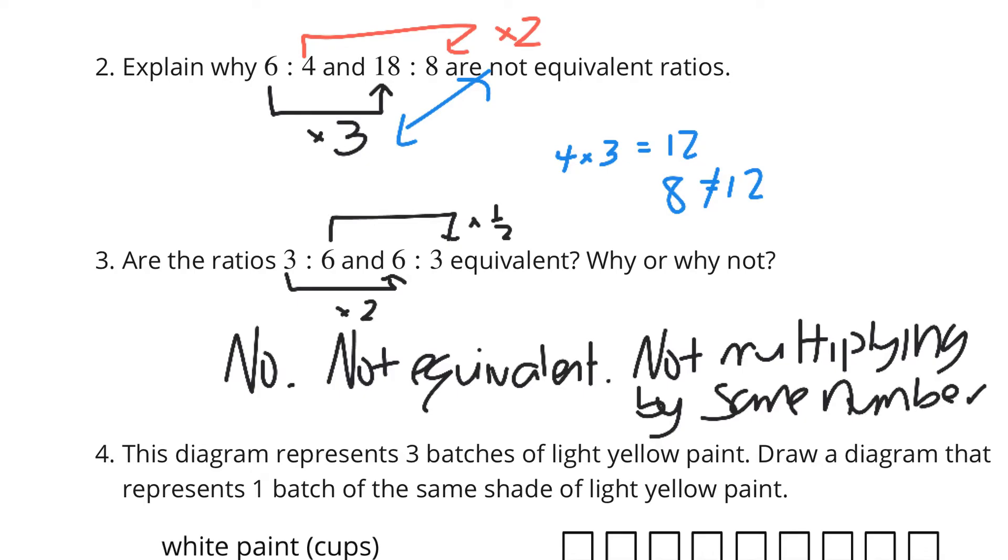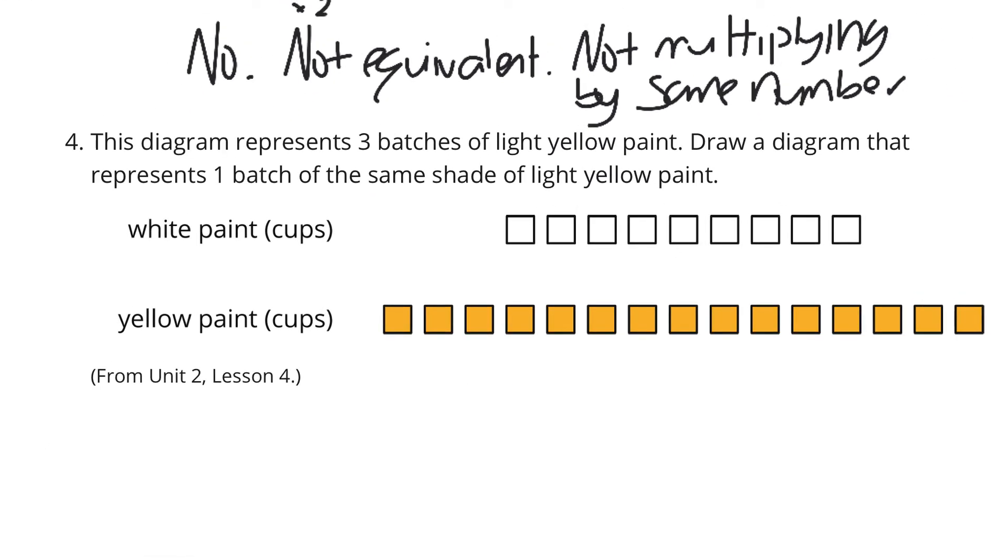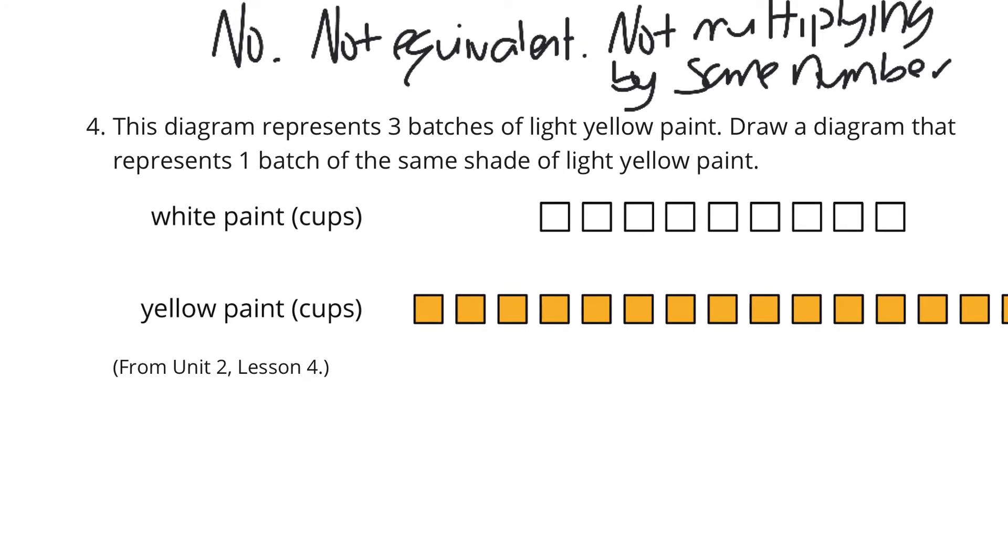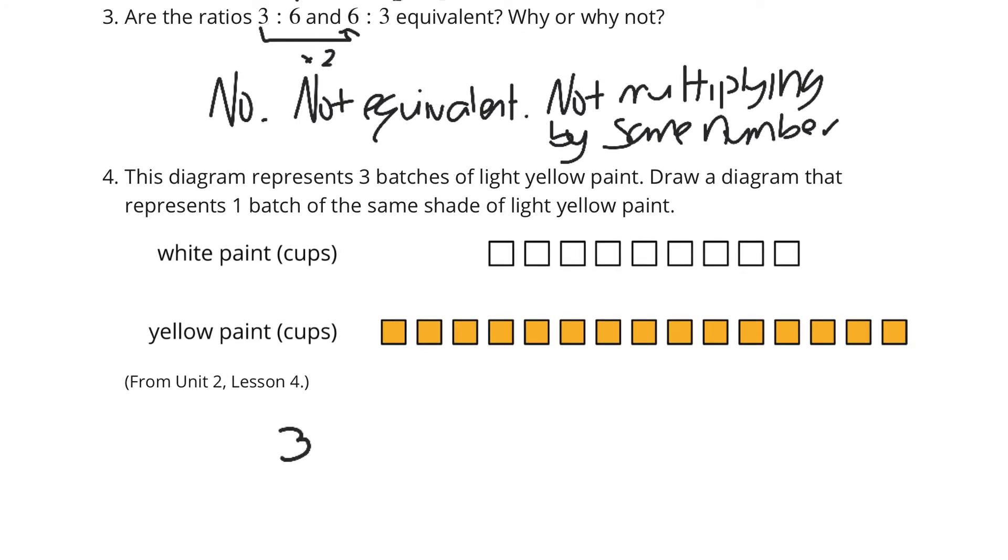Question 4. This diagram represents 3 batches of light yellow paint. Draw a diagram that represents 1 batch of the same shade of light yellow paint. Well, we're taking 3 batches down to 1, and 3 divided by 3 is equal to 1, and so we need to break this into thirds.